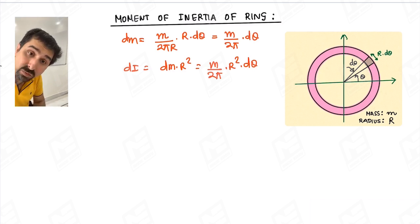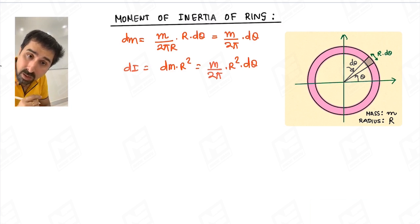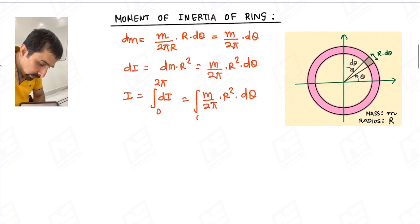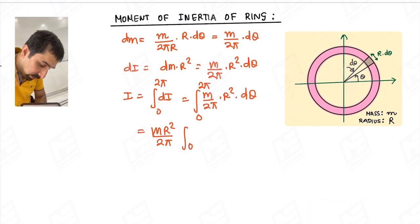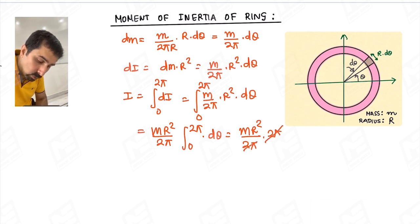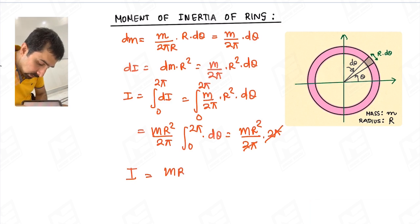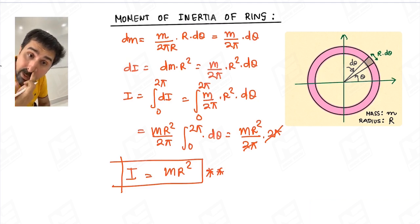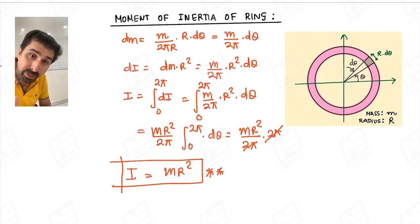Integrating from theta equals 0 to 2π covers all elements of the ring. So I equals the integral of dI from 0 to 2π, which is m upon 2π times R squared times dtheta from 0 to 2π. Since m R squared upon 2π is constant, this equals m R squared upon 2π times 2π, and the 2π cancels out. So the moment of inertia of a ring is mR². This is about an axis passing through the center of the ring and perpendicular to the plane of the ring — the axis specification is very important.